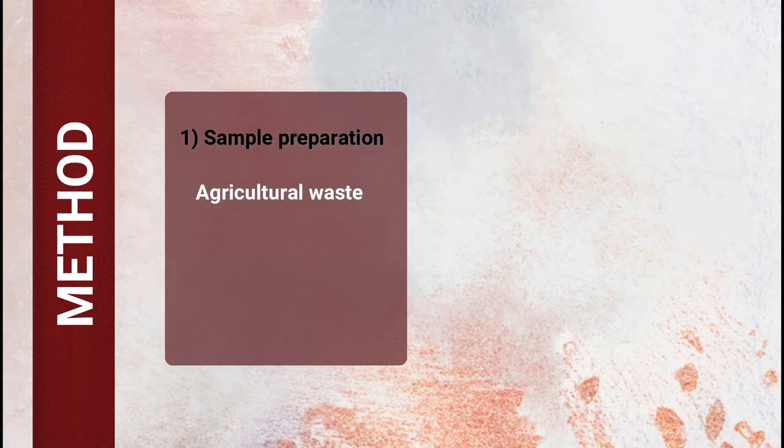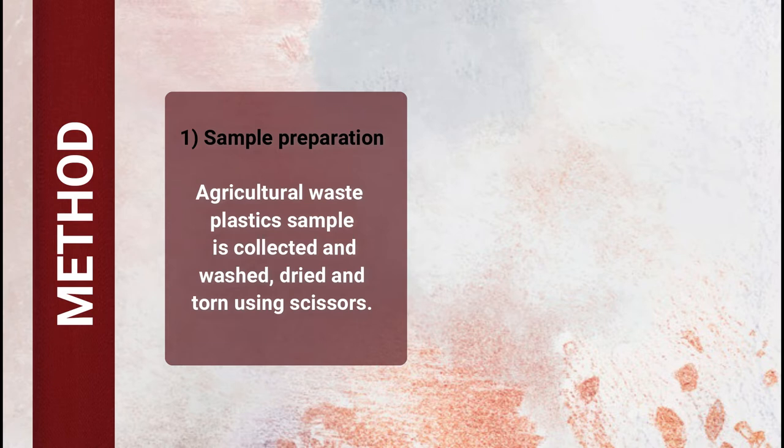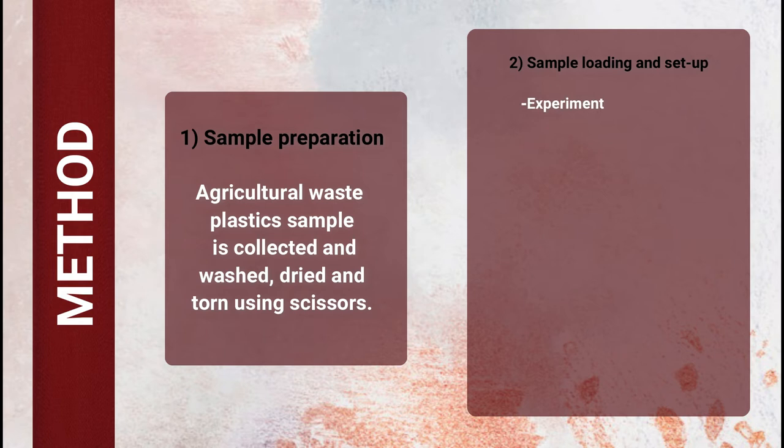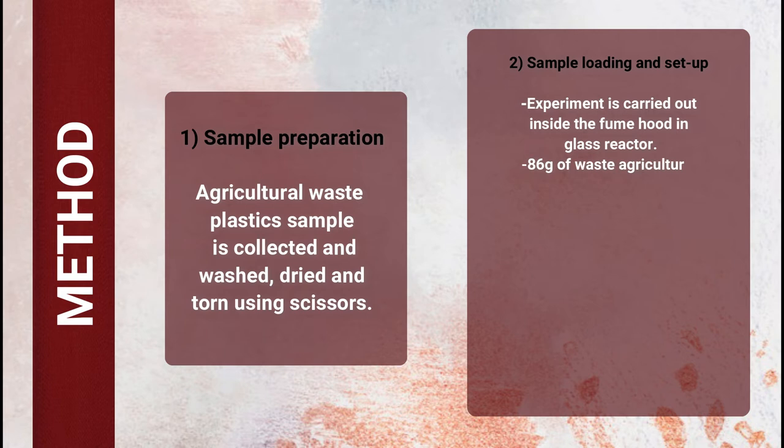The first step is sample preparation. The agricultural waste plastics will be collected, washed, dried, and cut using scissors. The second step is sample loading and setup. The experiment will be carried out inside the fume hood in a glass reactor.